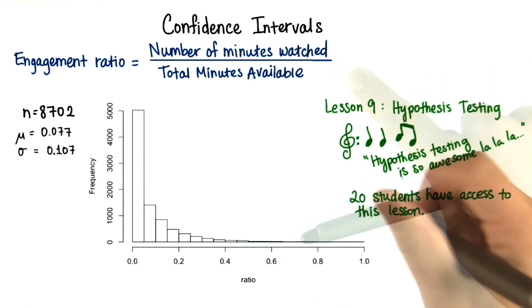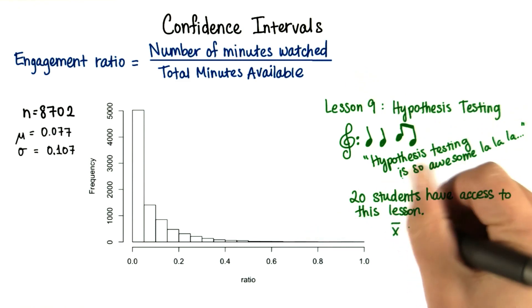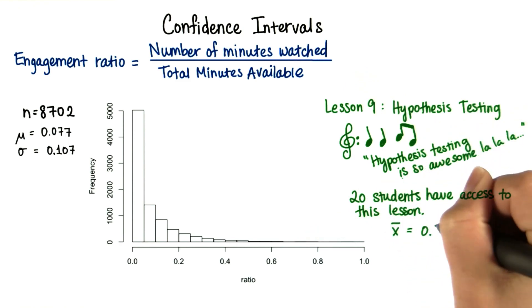Then I'll look at this ratio. Let's pretend that for this sample, we get that the mean ratio is 0.13.